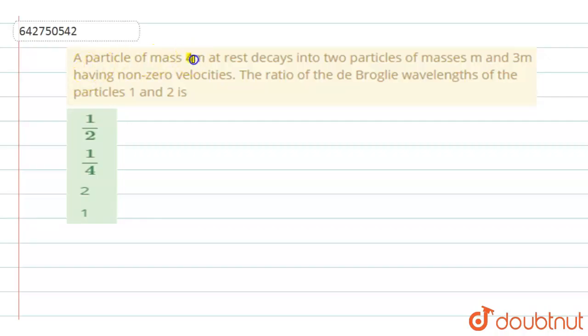A particle of mass 4m at rest decays into two particles of masses m and 3m having non-zero velocities. The ratio of the de Broglie wavelengths of particle 1 and 2 is?